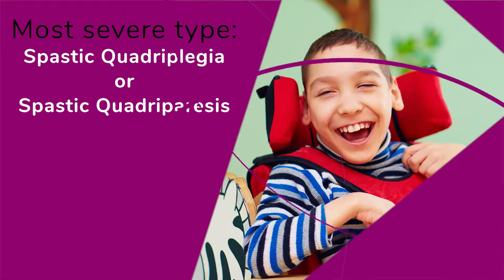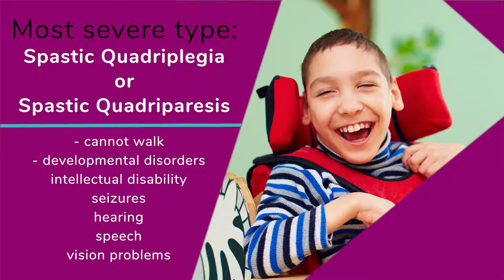The most severe type of spastic CP is classified as spastic quadriplegia, or spastic quadriparesis, which affects the trunk, face, and all four limbs. Individuals with this condition cannot walk and often have other developmental disorders such as intellectual disability, seizures, and hearing, speech, or vision problems.